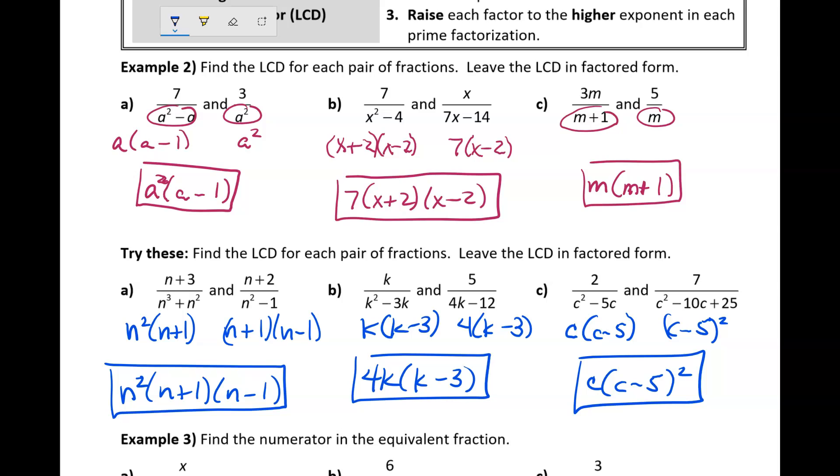Notice that (c minus 5) squared is the same thing as (c minus 5) times (c minus 5). Let's move on.